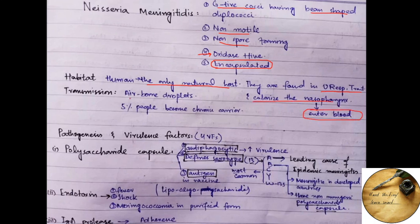It can be transmitted from one person to another person through airborne droplets and 5% of the people become chronic carriers. It means that bacteria reside in them but they never show the signs and symptoms of diseases caused by Neisseria meningitidis.